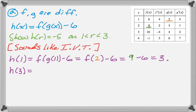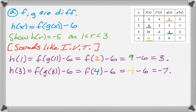Now we're going to do the same thing for h of 3. That's going to be f of g of 3, and then minus 6, which is f of, look up g of 3 in the table, and it's 4. So, f of 4, and then minus 6, and then look up f of 4 in the table, it's negative 1. So, negative 1 minus 6 is negative 7. So, negative 7 is less than negative 5, and 3 is greater than negative 5.